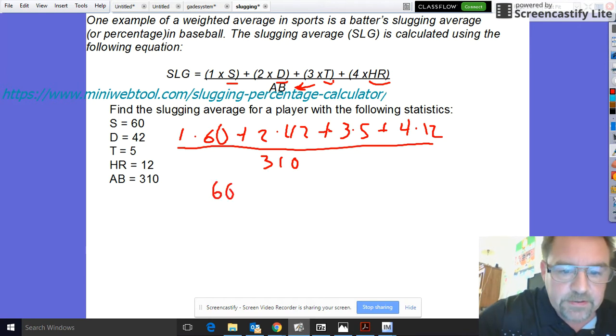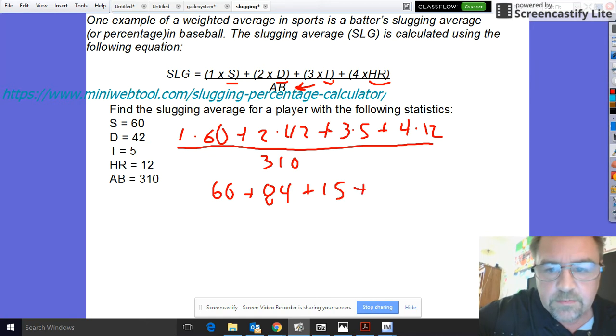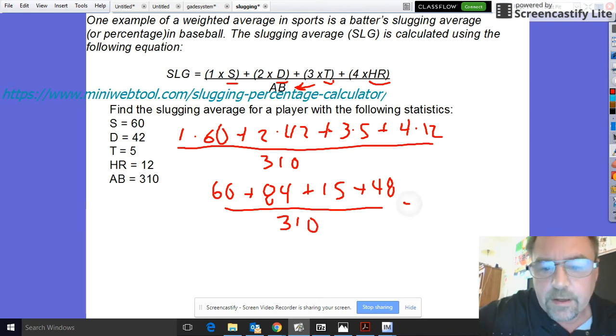You have 60 plus 84—2 times 42 is 84—plus 15 plus 48, still over 310. And when you add up everything in the numerator you end up with 207.